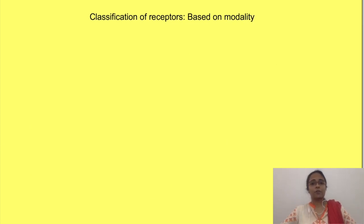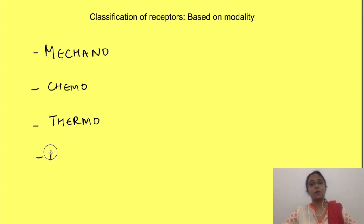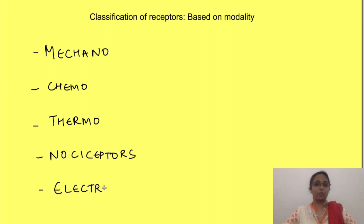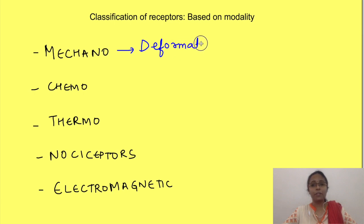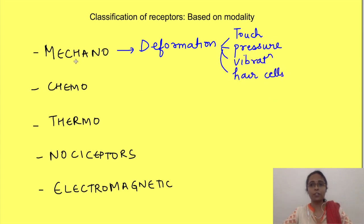The second classification of receptors is based on the type or modality of stimulus they detect. Based on this, receptors are classified into mechanoreceptors, chemoreceptors, thermoreceptors, nociceptors, and electromagnetic receptors. Mechanoreceptors detect deformation — for example, receptors for touch, pressure, and vibration, as well as the hair cells of the cochlea for auditory stimuli.